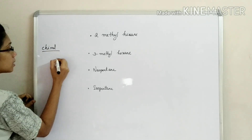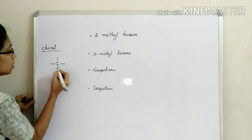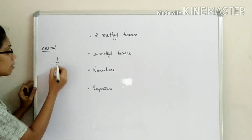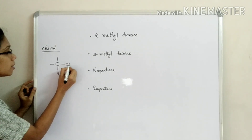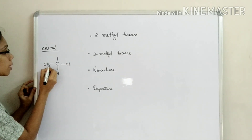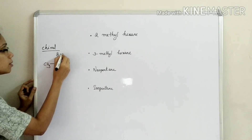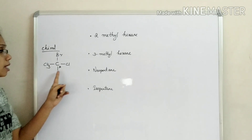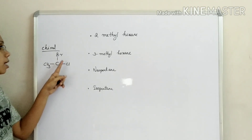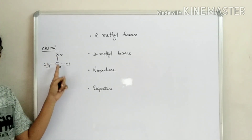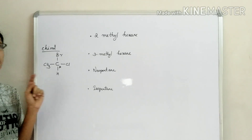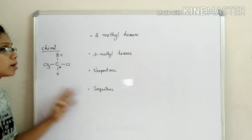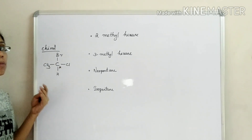This is a chiral carbon. A carbon with four bonds — if those four groups attached are all different, we call that carbon chiral. If the four groups are not all different, it is not a chiral carbon.